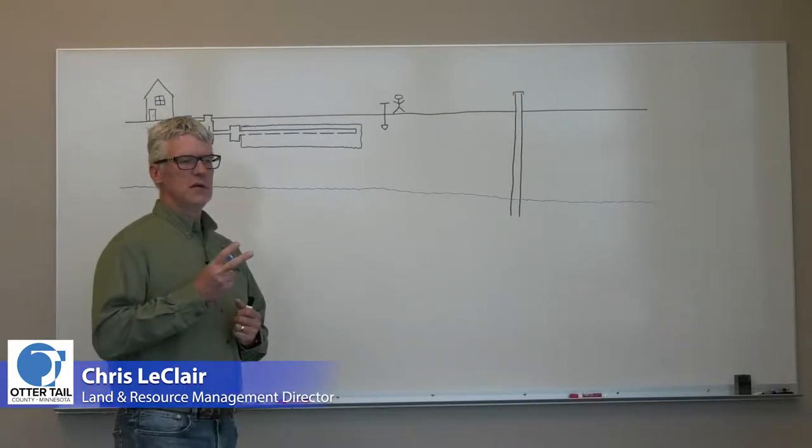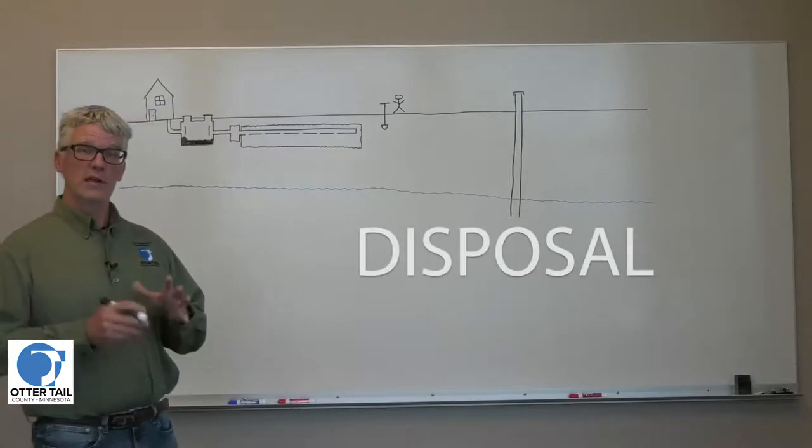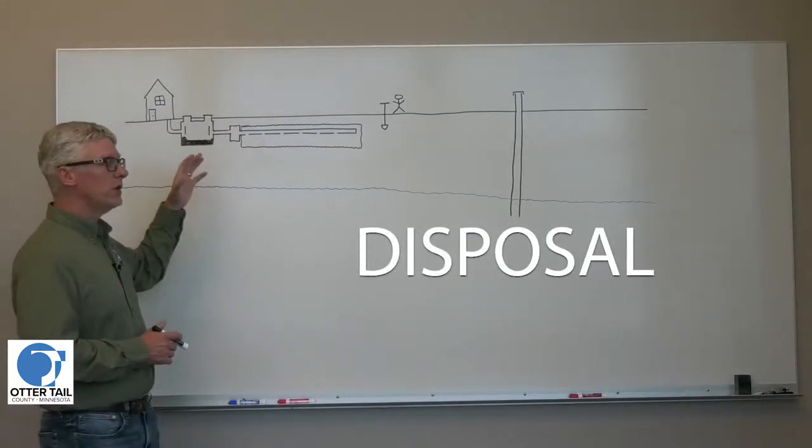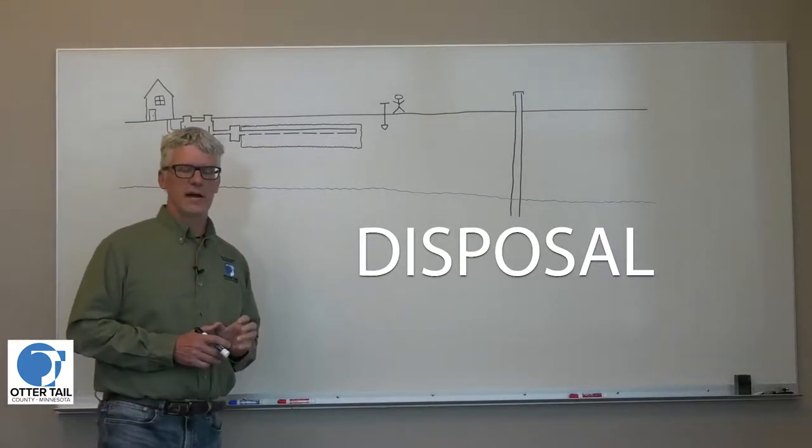Now there are two things that a septic system does. The first is disposal. And what disposal means is that when you run water in your house, you flush your toilet, the water goes away. That's one thing the septic system provides.